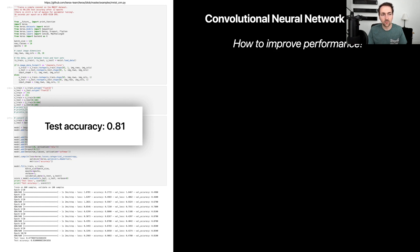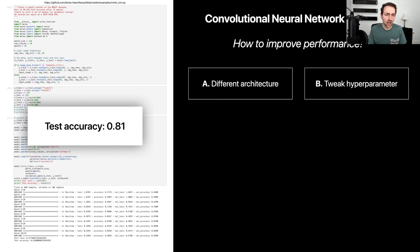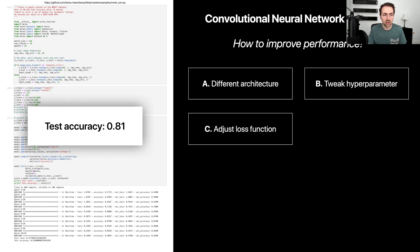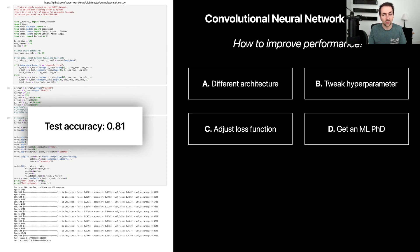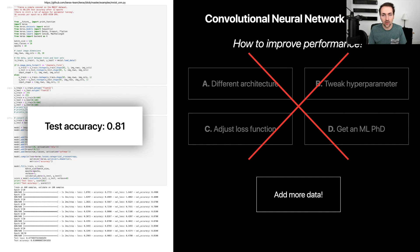There are a couple of different things we could do. For example, we could try a different architecture — maybe this convolutional neural network needs more layers, less layers, or it's too complicated and we just need a simpler model. Another thing we could do is tweak some of the hyperparameters of the training process or model architecture itself. We could also adjust the loss function, maybe adding or removing some term. Or maybe we really need to reconsider this problem, go to our statistics textbooks and understand more about what this data really is. But all these things sound much too hard, and I'm too lazy to really bother. So I want to propose an alternative: just simply add more data to your dataset and see what happens to your test accuracy.